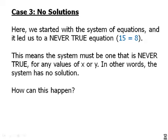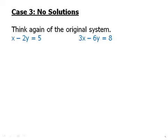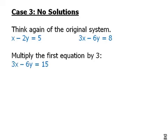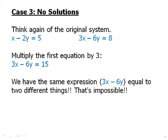How can this happen? Think of the original system again. Multiply the first equation by 3, and what we get is 3x minus 6y equals 15. And notice we have the same expression on the left in both equations equal to different things. We have the same expression equal to two different things. That's impossible. There's no way that 3x minus 6y can equal both 8 and 15 at the same time. And that's why we were led to the paradox 8 equals 15.